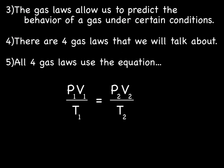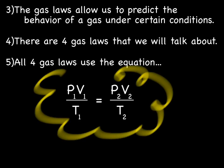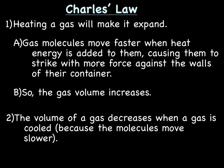The gas laws allow us to predict the behavior of gases under certain conditions. There are going to be five laws we'll talk about, and four of the five use the same equation: P1V1 over T1 equals P2V2 over T2. That's pressure 1 times volume 1 divided by temperature 1, equals pressure 2 times volume 2 divided by temperature 2. The 1 stands for original and the 2 stands for the changed or new value. You need to know this equation, although we'll use it so much it won't be a problem.